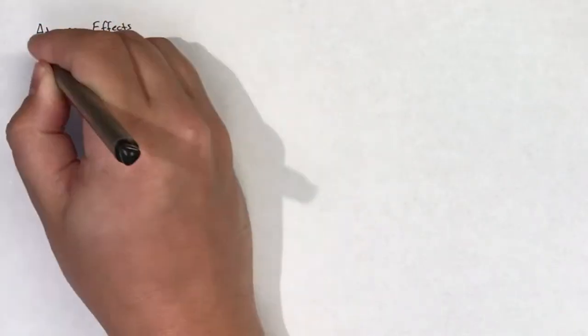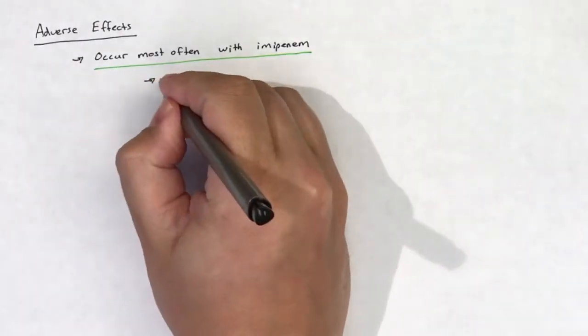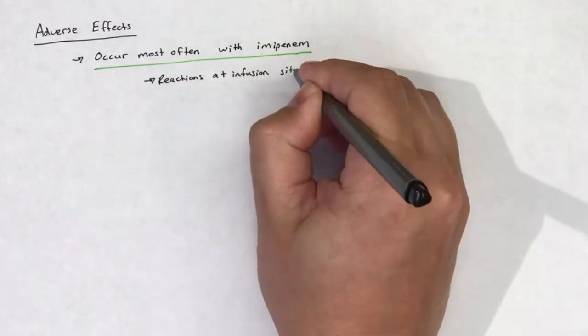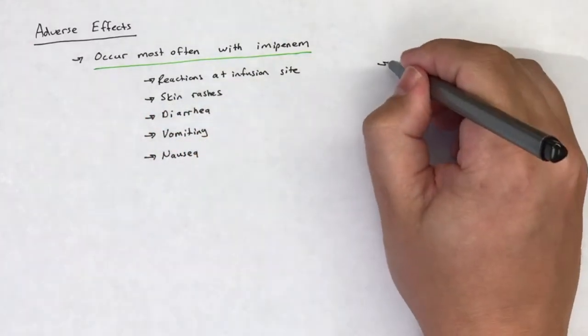As I mentioned previously, adverse effects happen the most often with imipenem, but can still occur with the other carbapenems. These adverse effects include reactions at the infusion site, skin rashes, diarrhea, vomiting, and nausea.